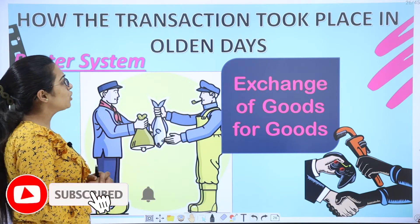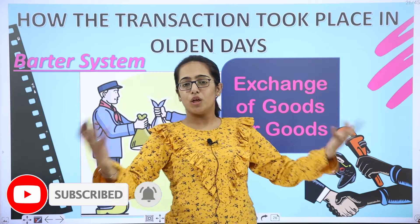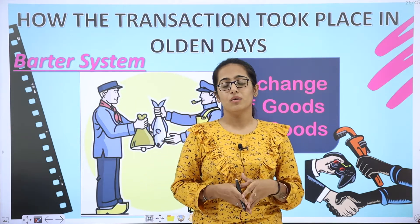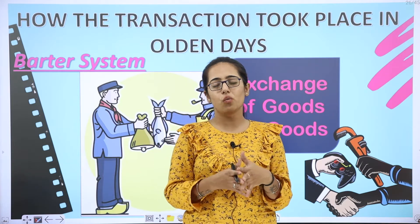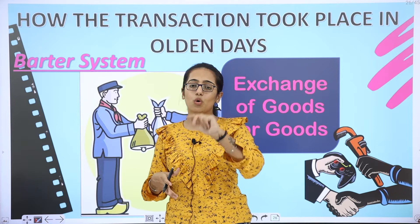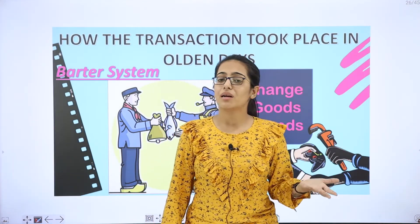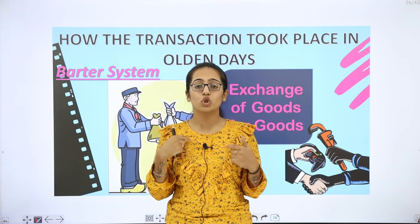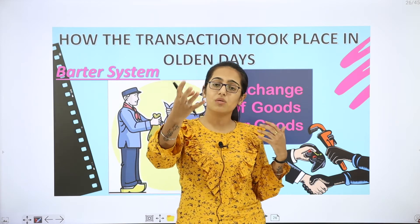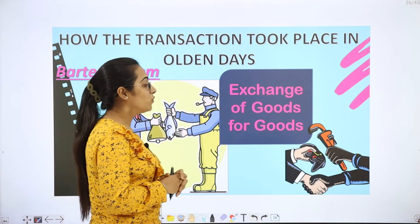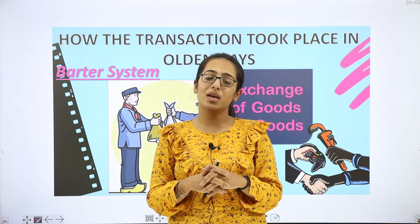Now let's look at how transactions took place in olden days. In olden days there was the barter system — goods ke badle mein goods lena, exchange of goods for goods. In this system there was a very important feature: double coincidence of wants. Whatever I have, the other person must need it, and whatever the other person has, I must need it. That is the barter system.